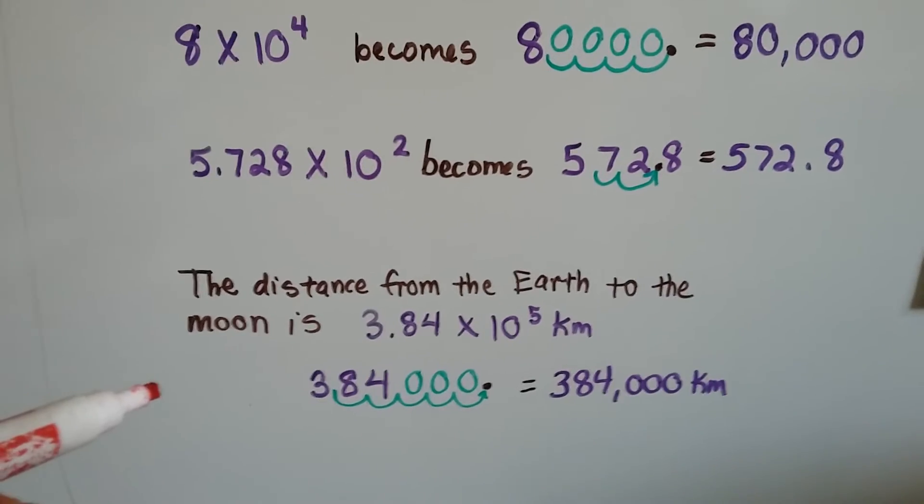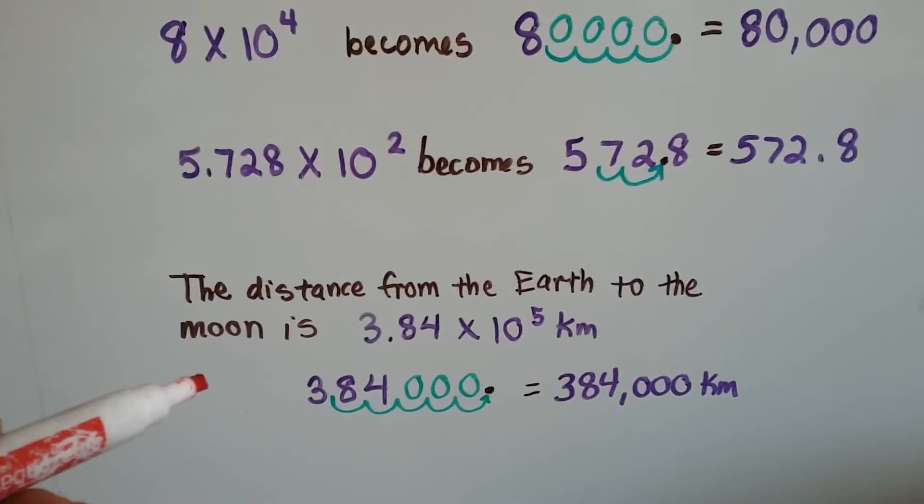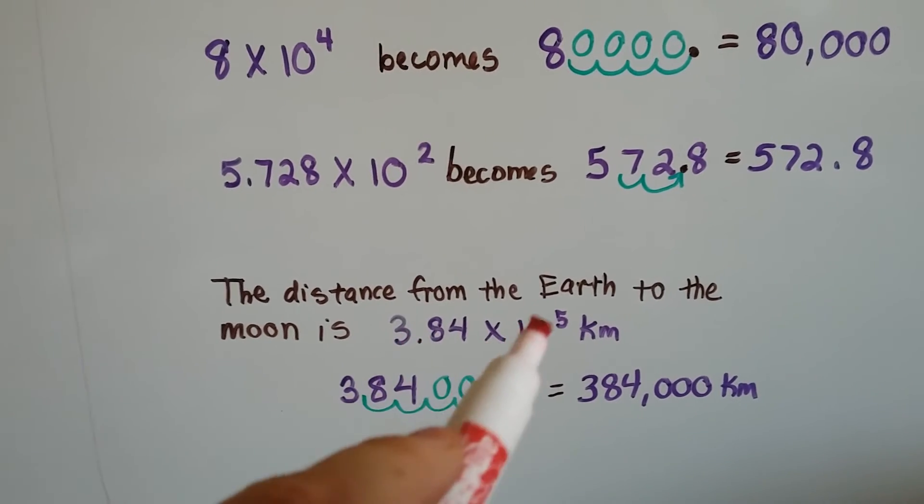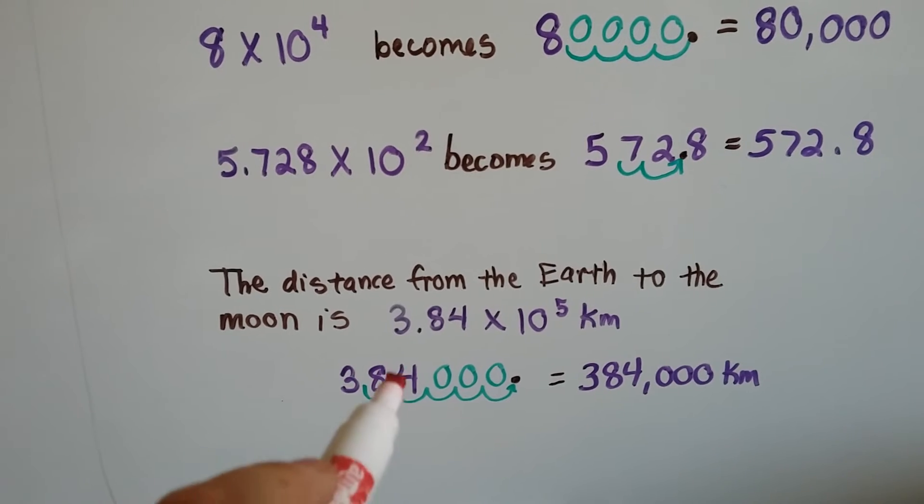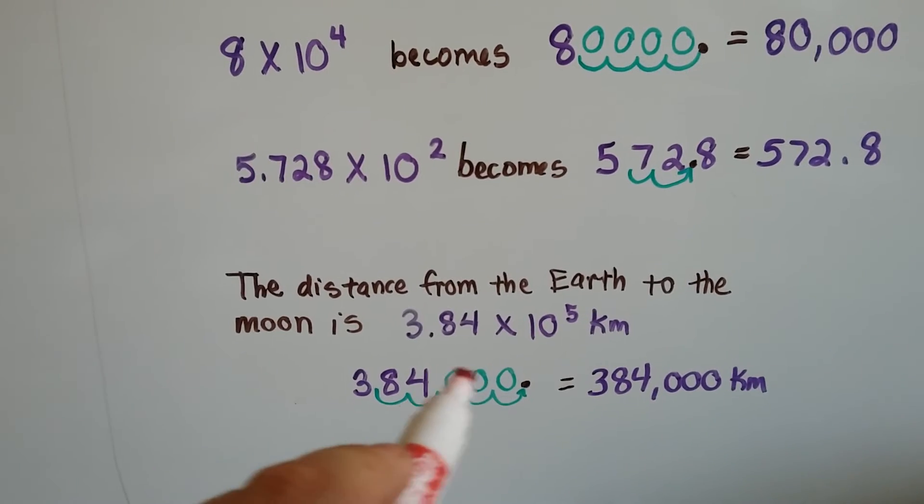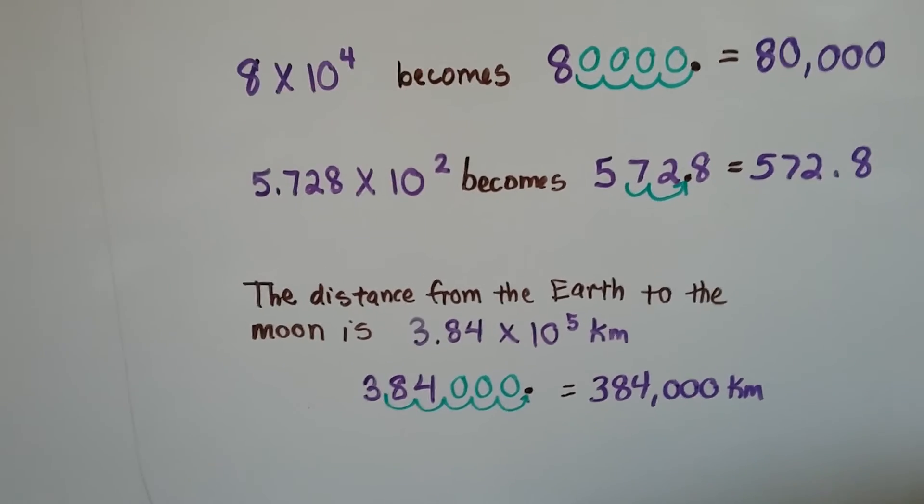The distance from the earth to the moon is 3.84 times 10 to the fifth kilometers. The decimal point is in between the 3 and the 8. We're going to move 5 hops, so we go 1, 2, 3, 4, 5. We fill in the zeros for the empty hop spaces and we see that it's 384,000 kilometers.